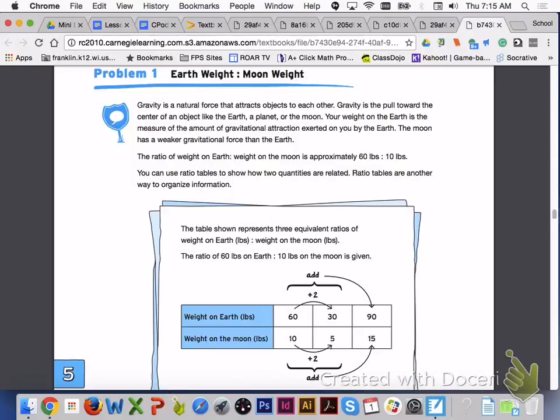The moon has a weaker gravitational force than the earth. The ratio of weight on earth to weight on the moon is approximately 60 pounds to 10 pounds. You can use ratio tables to show how two quantities are related. Ratio tables are another way to organize information.